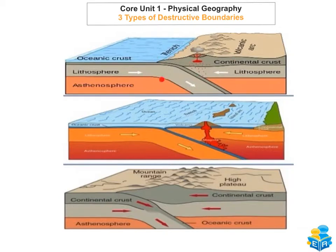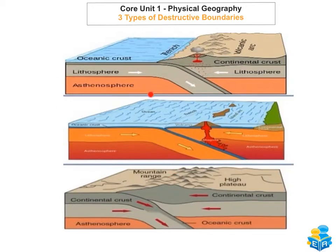Here we have the three different types of destructive boundaries. In the first one we have an oceanic and continental crust crashing against each other — colliding. In the second one you've got an oceanic and oceanic crust colliding, and in the third one you've got a continental and continental crust colliding. These are destructive plate boundaries, sometimes also known as convergent plate boundaries.